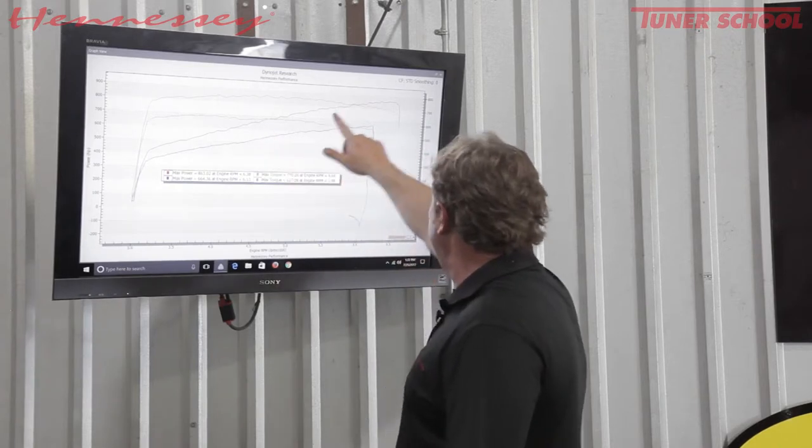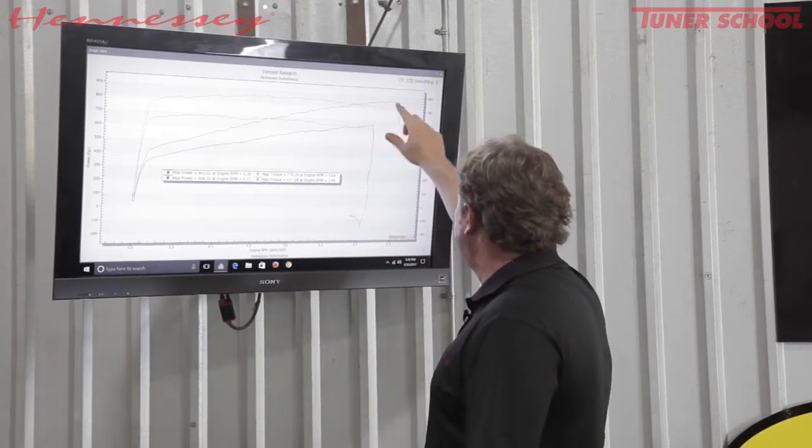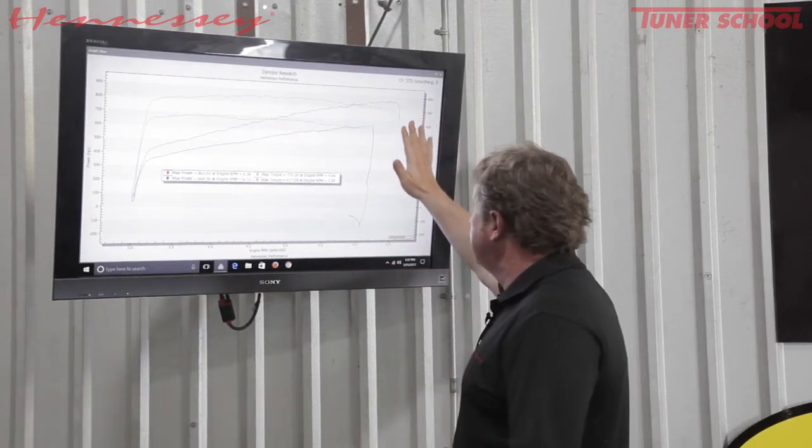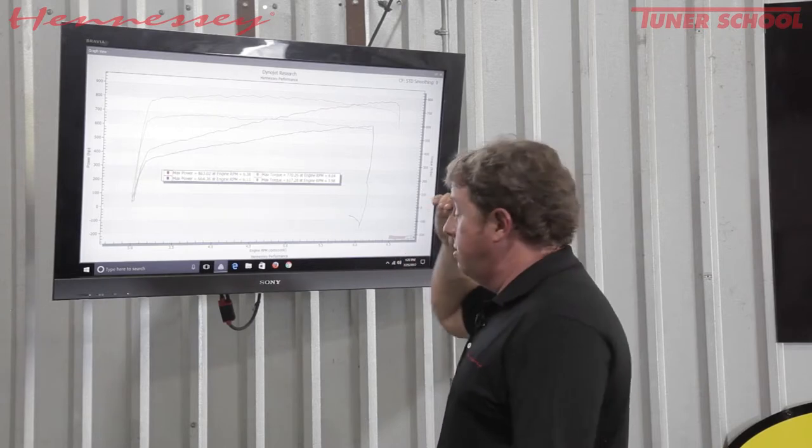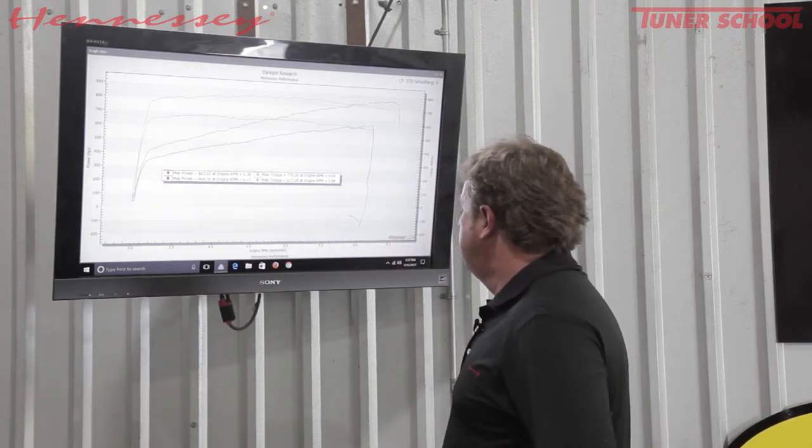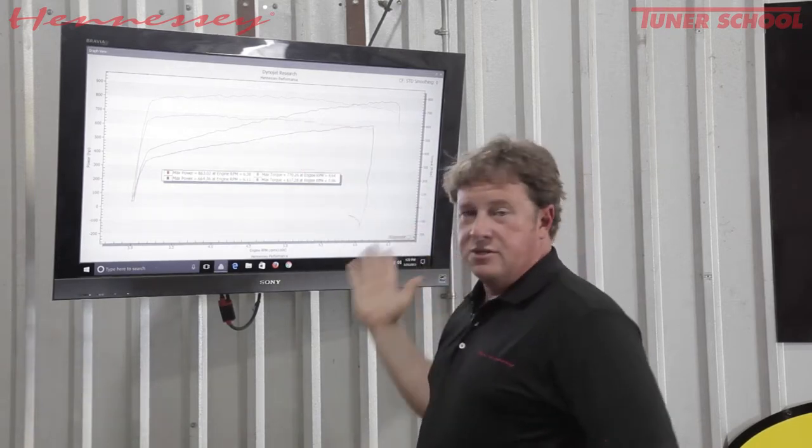It just keeps on going. We've raised the rev limit on it a little bit, so it carries the power out further. Basically, the faster it goes, the more RPM the engine pulls, the more power it makes and the faster it goes. It's still got that torque to carry it and get it moving off the line.